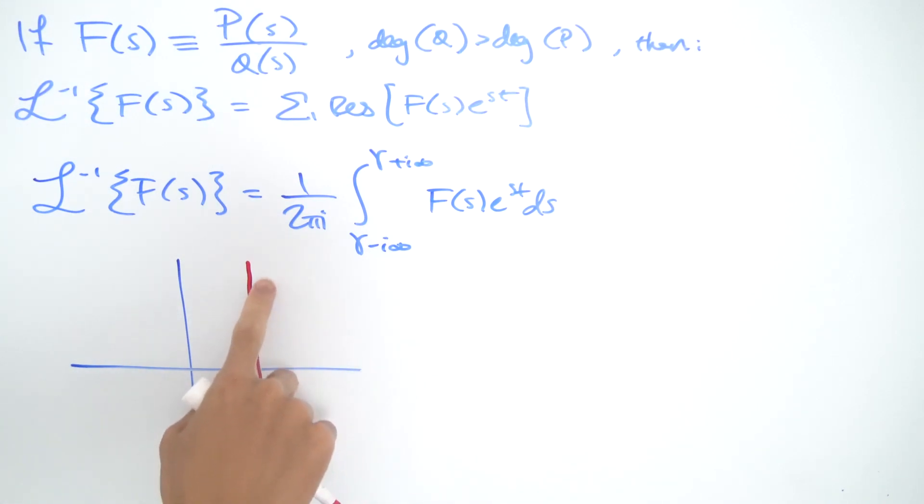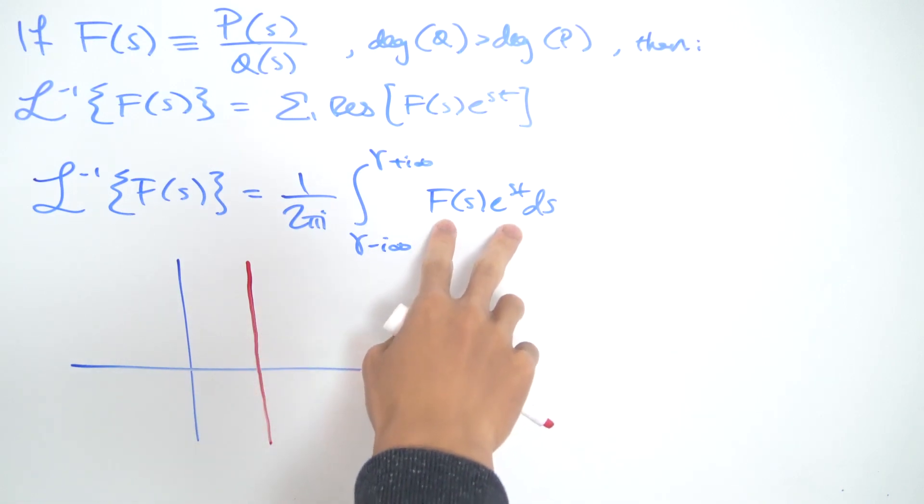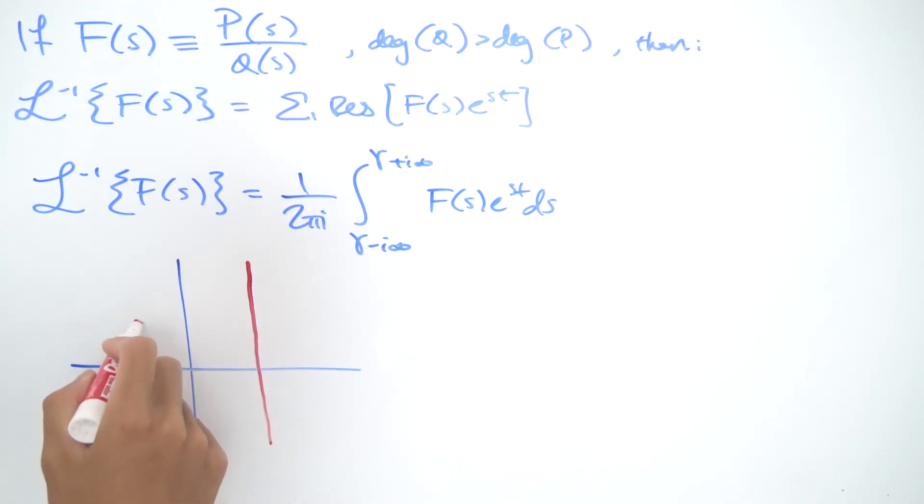First of all, it needs to be on the right of all the poles of the function. In particular, this function F(s), because e^(st) is entire. So let's say, for example, our function has some poles. Our line γ, where the real part of s equals γ, needs to be big enough such that all the poles are contained to the left of that line.